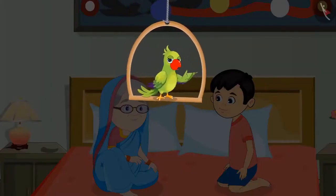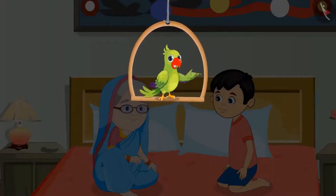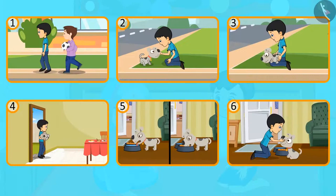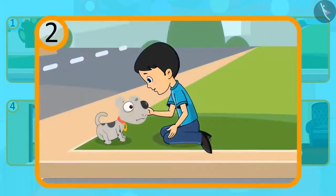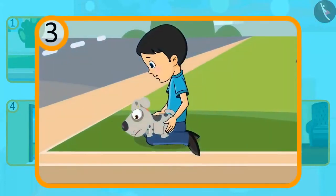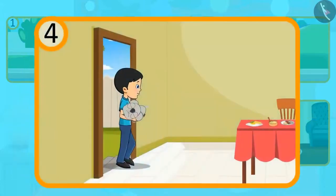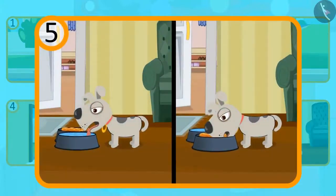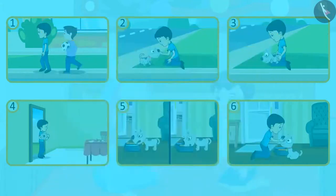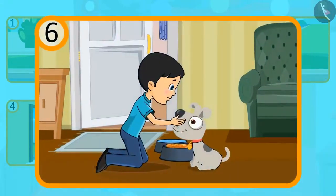Children, today you heard the story of Minku and his new friend. Do you remember the sequence of the story? Let's see what happened first. Minku was first going to play with his friends. After that, Minku saw a small puppy on the way. And then he took him on his lap. After taking him in his arms, he took him home. And then he gave the puppy something to drink and eat. And in the last, Minku and the puppy became friends and they lived together forever.